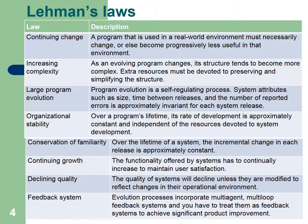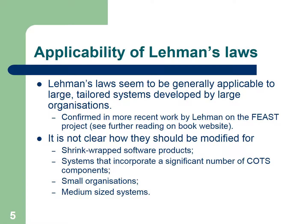Feedback system: software evolution must be treated as a feedback system to achieve significant product improvement. Lehman's laws seem to be generally applicable to large systems developed by large organizations, which is confirmed by more recent work by Lehman on the FEAST project. See further reading on the book website.